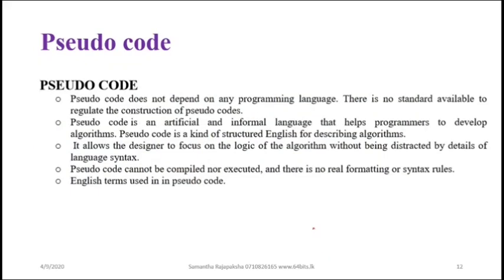Another method is pseudocode. Pseudocode means writing simple English language to write the steps. Pseudocode doesn't have strict rules. Once you write the algorithm steps in plain English, anybody can read and understand. Changes are easy to make - just like building a model with cardboard, nothing is lost if there is a problem. Pseudocode doesn't waste time; if there is a modification you can modify it easily. That is why we use pseudocode.